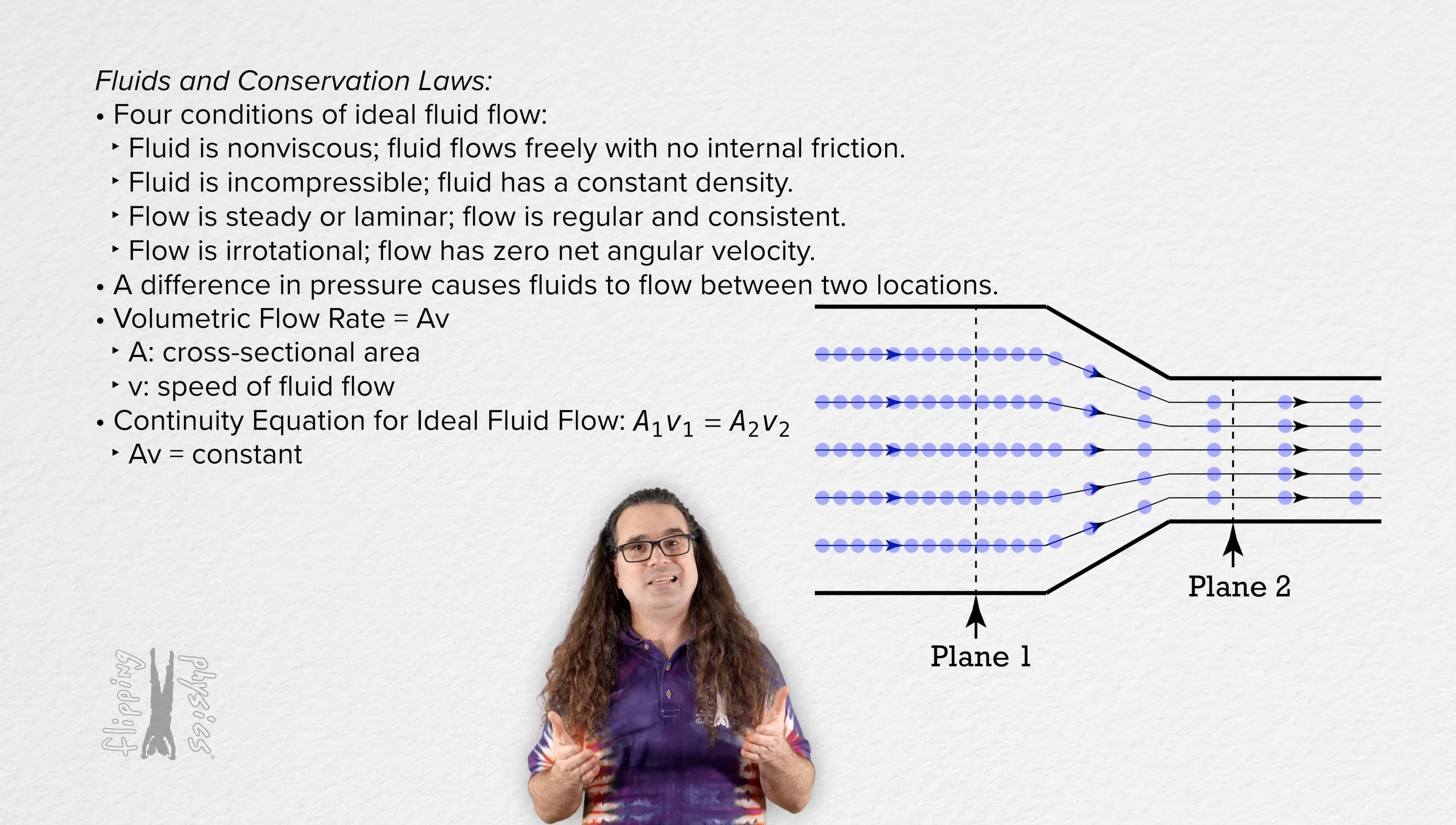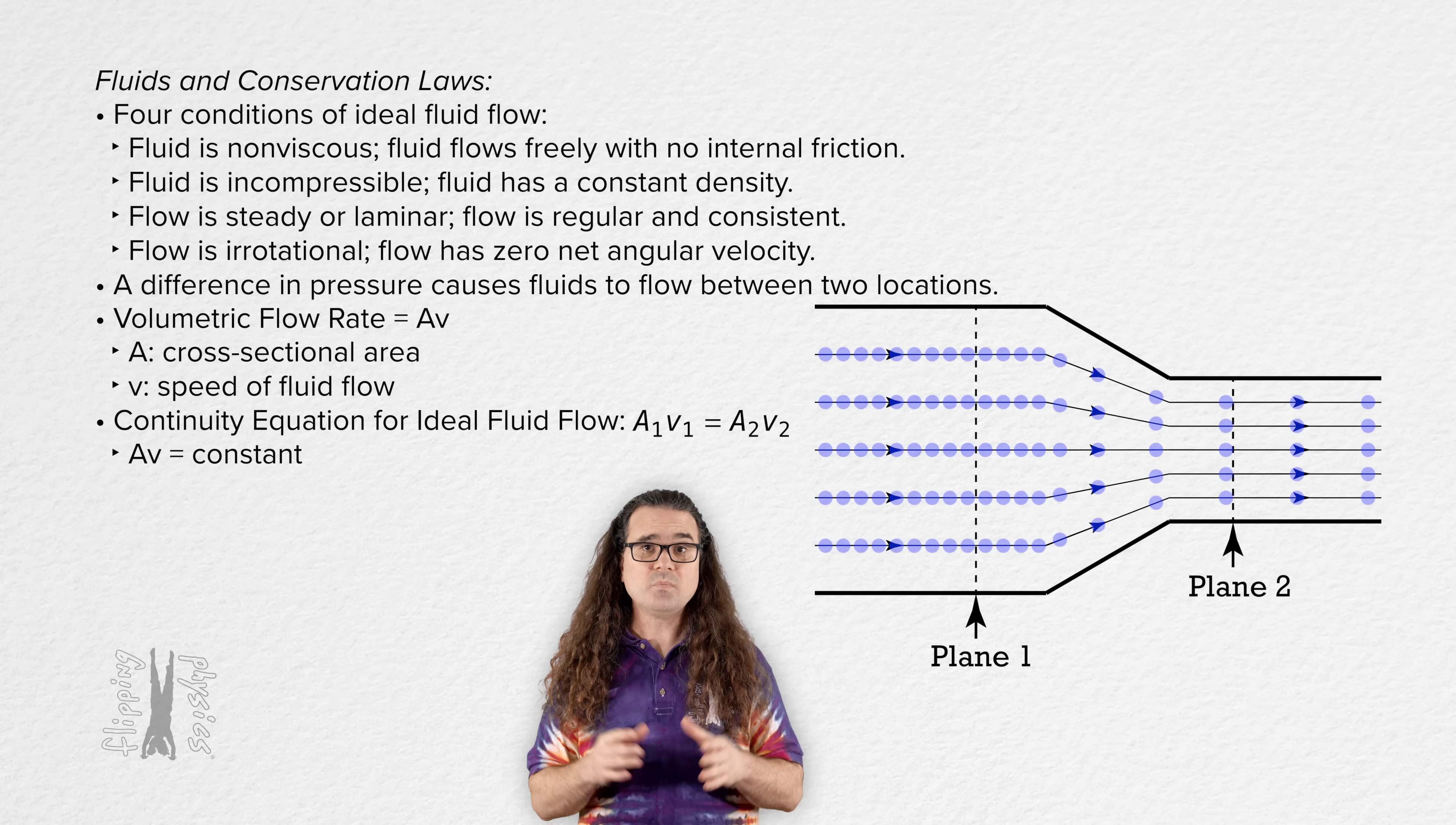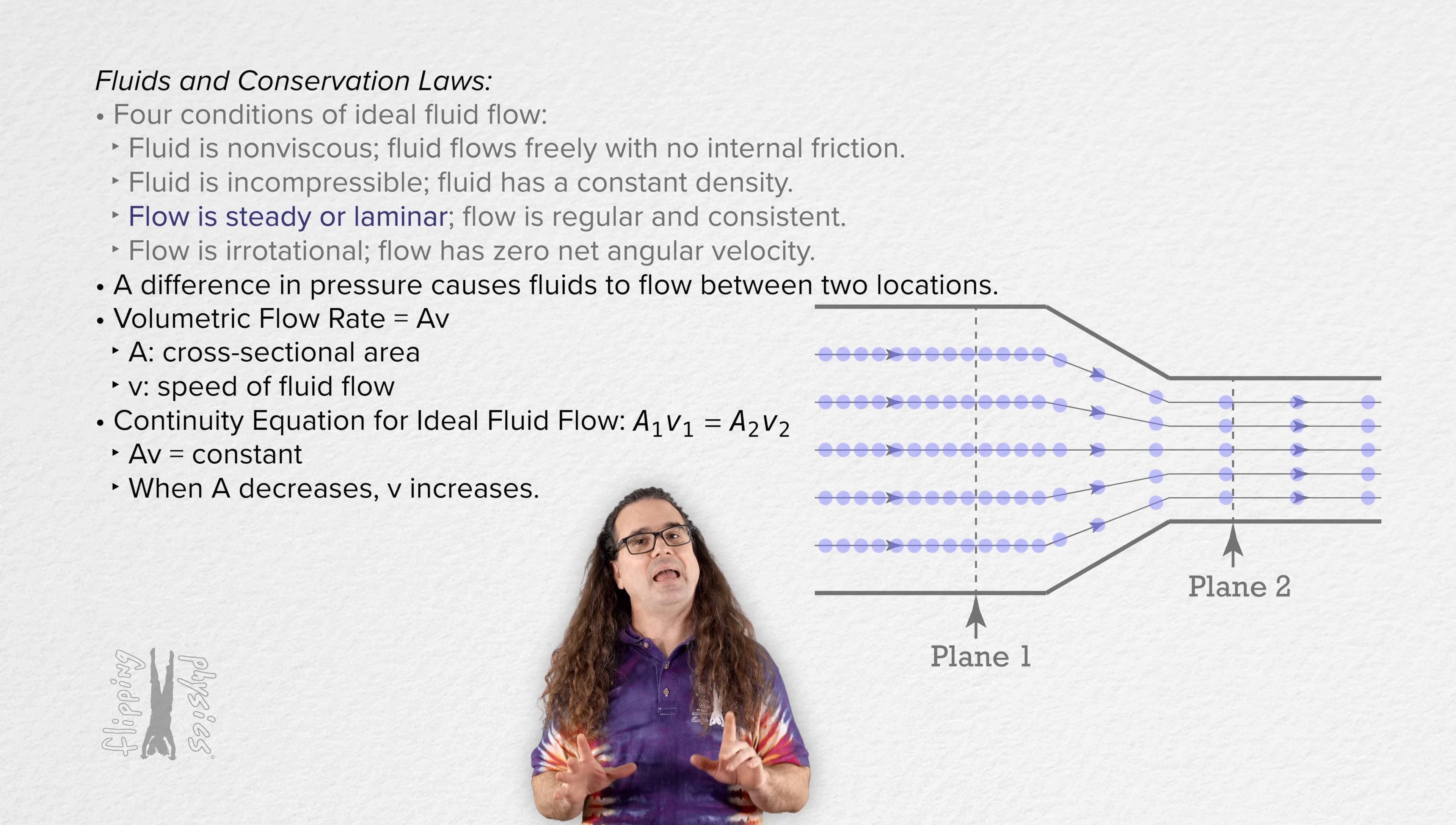You can see this in this highly idealized animation I made of fluid flowing through a pipe which decreases in diameter. The lines with arrows in them are the streamlines showing the direction of fluid flow, and the closer those streamlines are to one another, the faster the fluid particles flow. You can see that the continuity equation for ideal fluid flow demonstrates that when the cross-sectional area of the pipe decreases, the speed of the fluid flow increases. And this is ideal flow so you can see the flow is steady or, in physics terms, laminar.